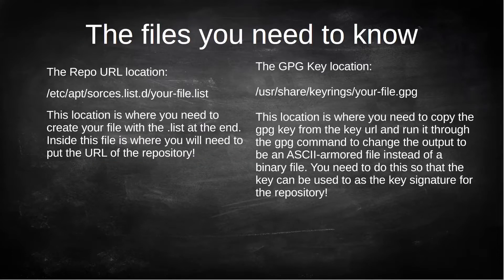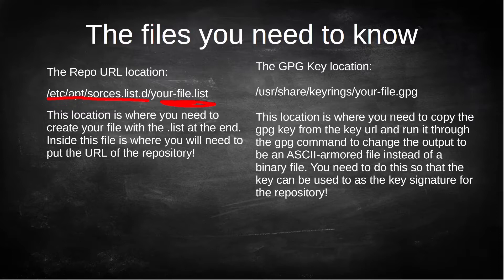Now there are two files you're going to have to know to add keys with GPG. One is going to stay the same, which is /etc/apt/sources.list.d — this is where you're going to be putting your file, where the repository URL will go. You can name it anything you want, but it has to have a .list extension for it to be read. The new location where the GPG key is going to go is /usr/share/keyrings, and your file must end in .gpg.